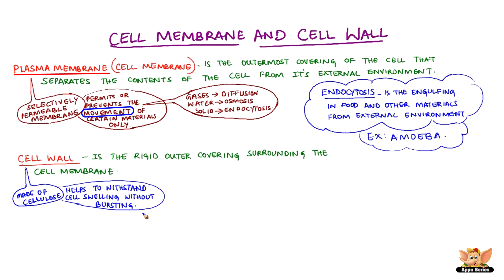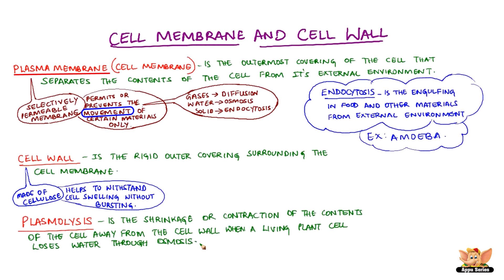Another process, plasmolysis, can occur sometimes. Plasmolysis is the shrinkage or contraction of the contents of the cell away from the cell wall when a living plant cell loses water through osmosis.